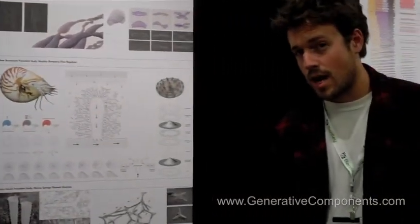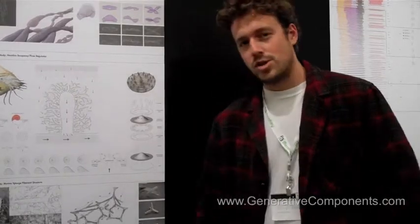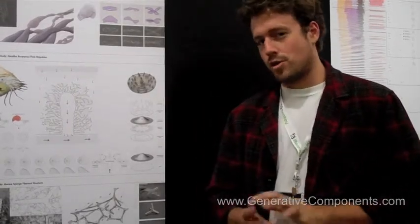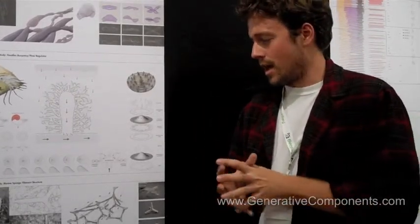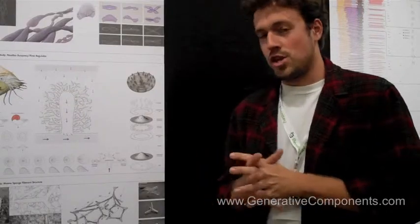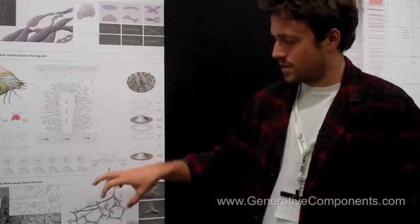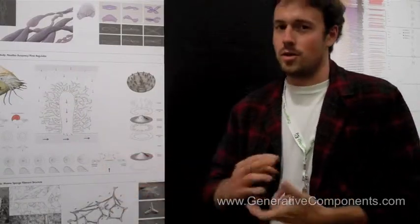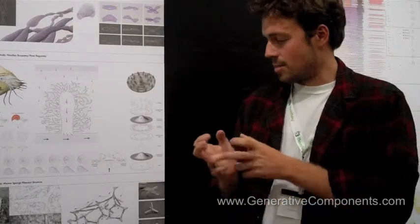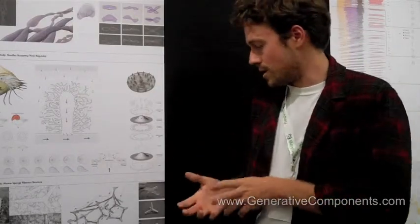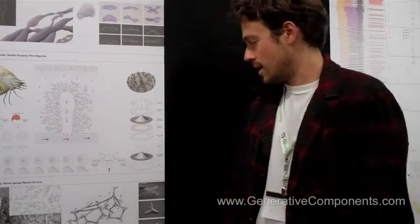My name is Rocky Hanisch. I looked at green sponges and their structural capacities for ventilation and exchange of nutrients. Sponges are comprised of spicules that float in a membrane that's directional. My study was to take that biological structure and turn it into a node that reflects in a network.